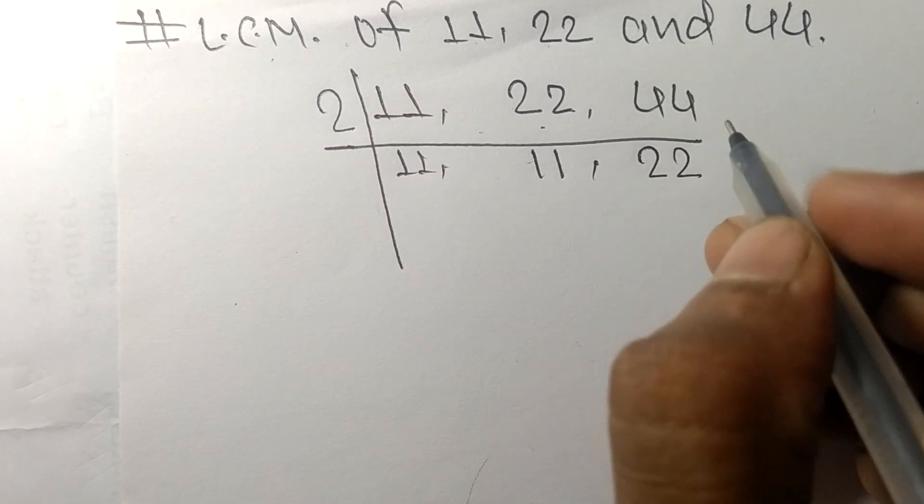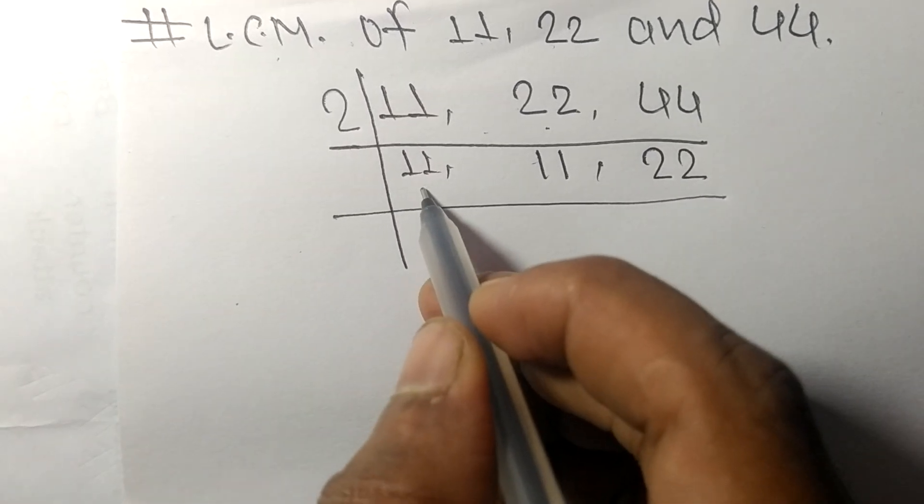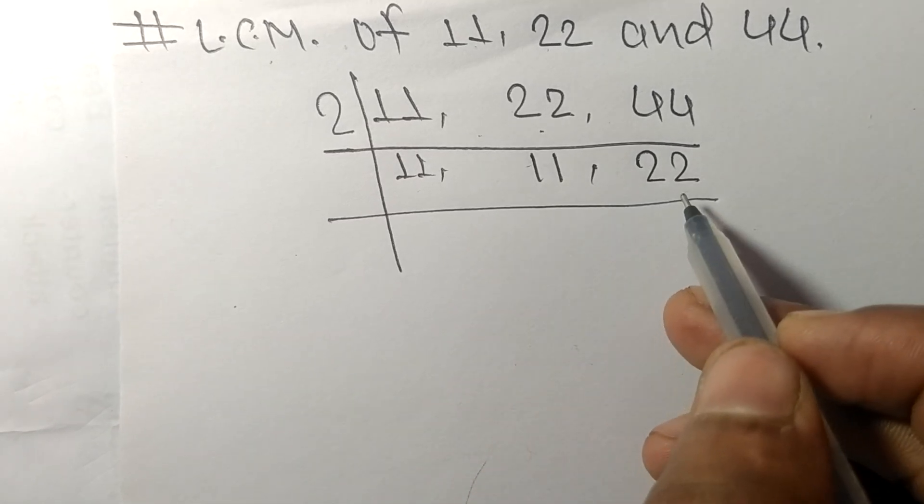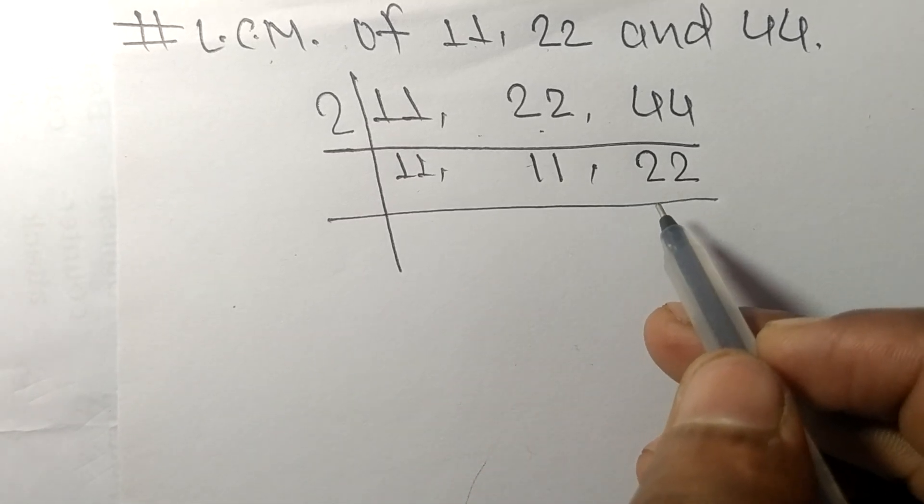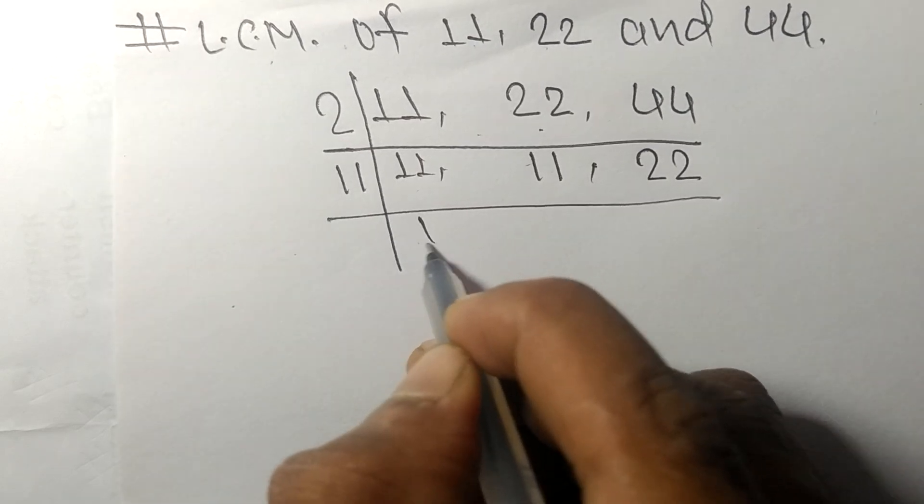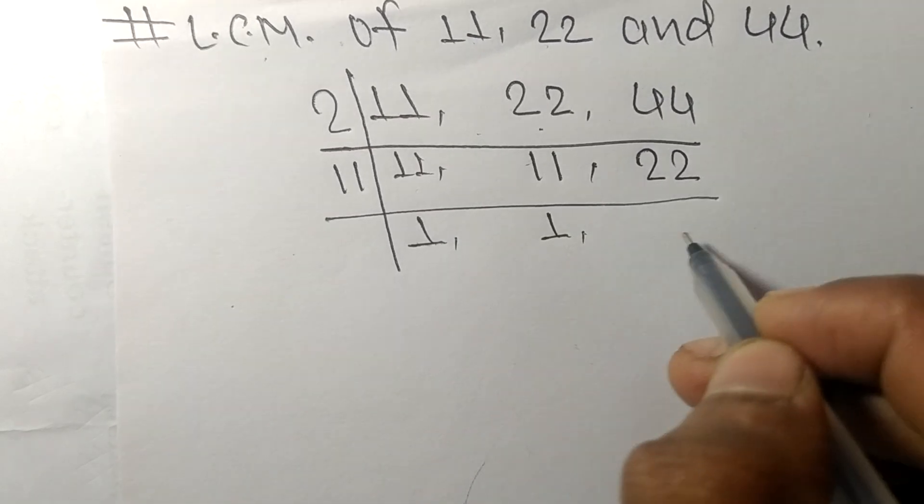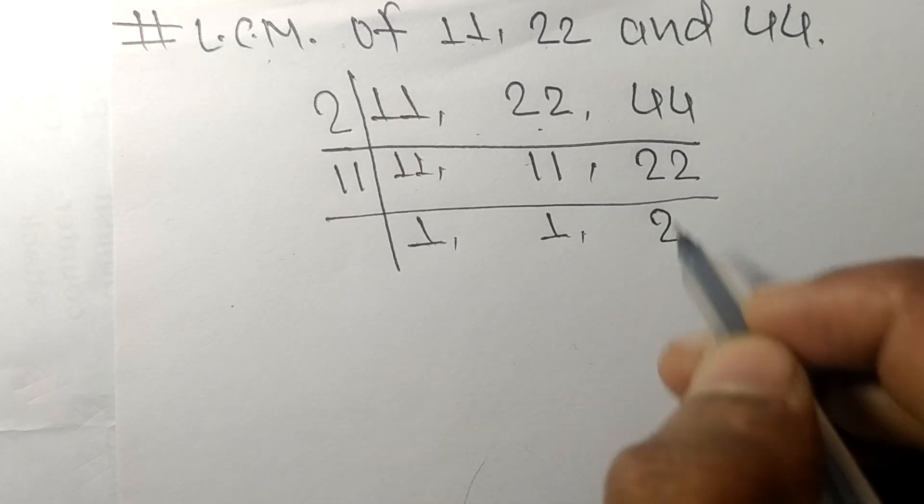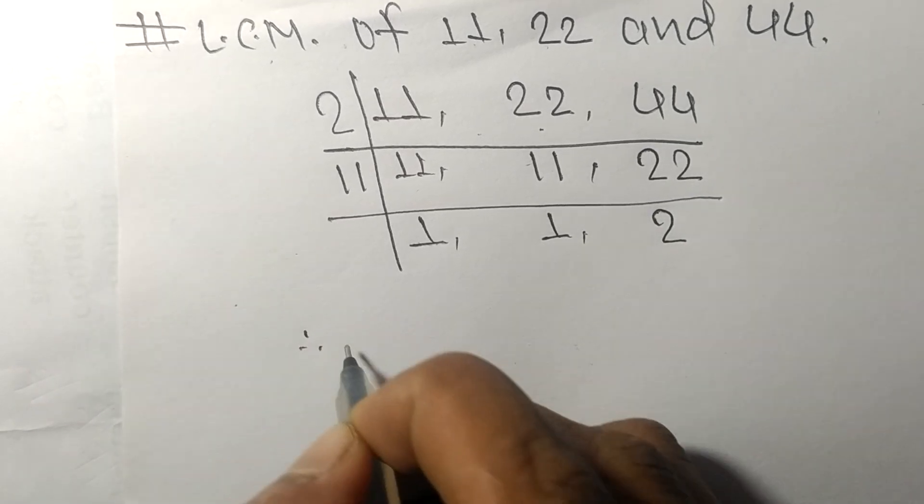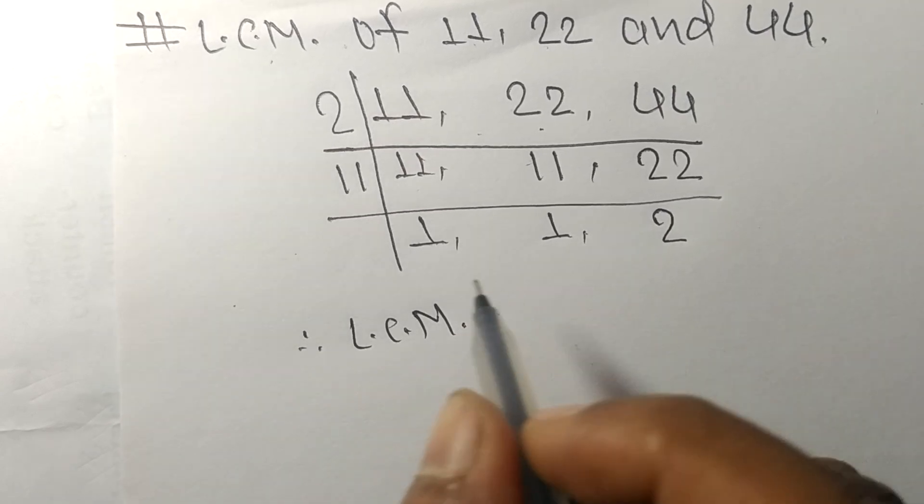So now we got 11, 11, and 22 which are exactly divisible by 11. So 11 times 1 equals 11, 11 times 1 equals 11, 11 times 2 equals 22.